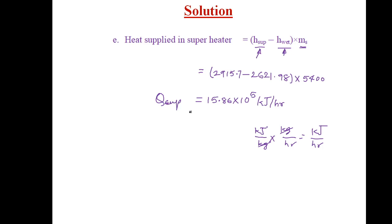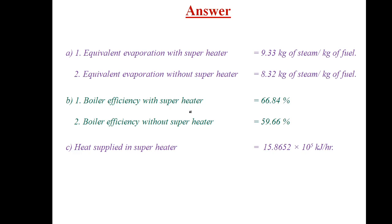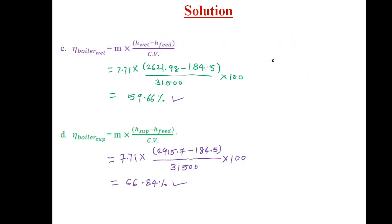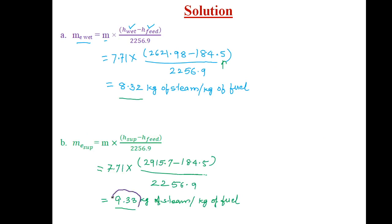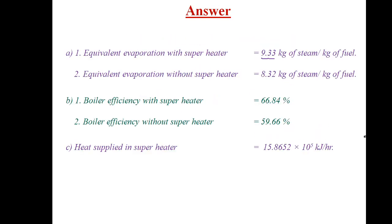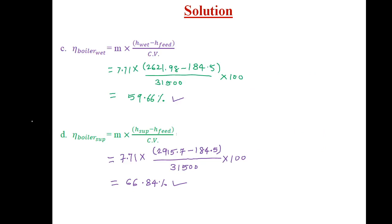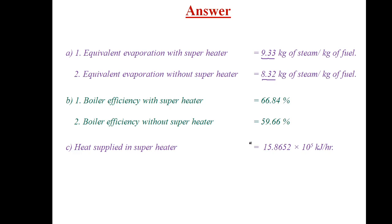So now we write the answers systematically. Equivalent evaporation with superheater is 9.33 kg of steam per kg of fuel, and without superheater it is 8.32. Boiler efficiency without superheater is 59.66% and with superheater is 66.84%. Amount of heat supplied in the superheater is 15.86 × 10⁵ kJ/hour.